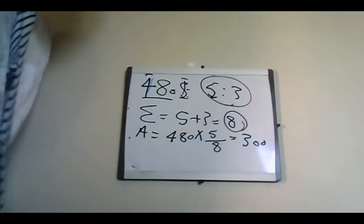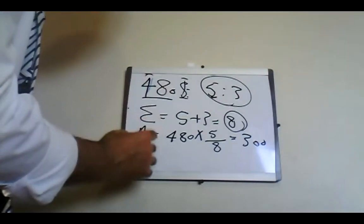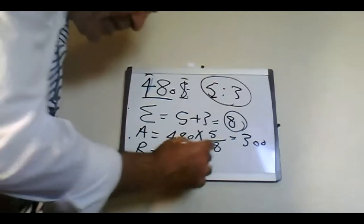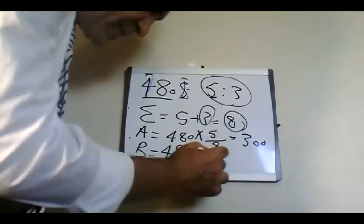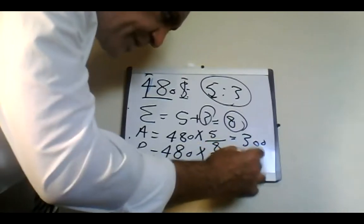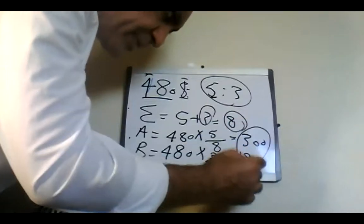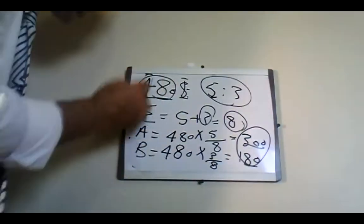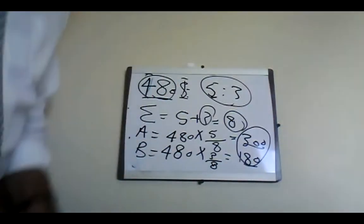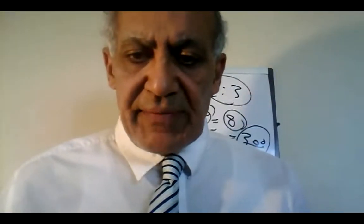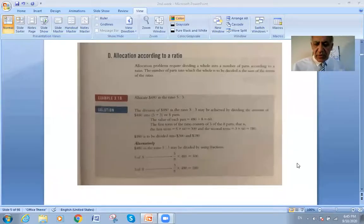Person B's share will be 480 multiplied by 3 over 8, which equals 180 dollars. If you add both 300 and 180, they come to the total amount of 480 dollars. That was the second example.